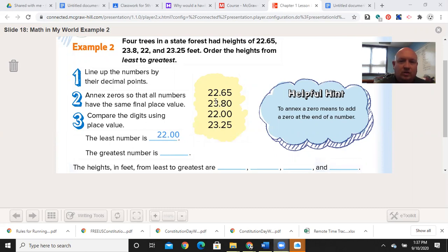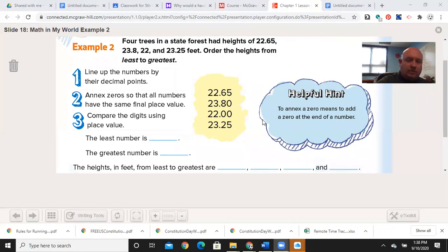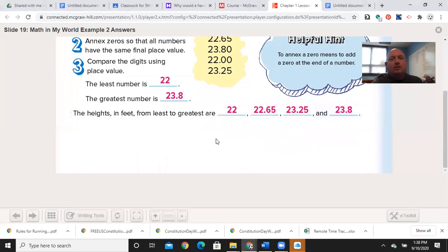Now the greatest is going to be similar. It's between the 23s. That's the same. The three is the same. Eight is greater than two, so 23.8 is the largest. We could say 23.80. But now we can start from least to greatest. We know that 22.0 is going to be the smallest, then 22.65, 23.25, 23.8. Make sure you're lining up the decimal points. That's the biggest piece of advice I can give to you. Also the largest source of accidents and mistakes.